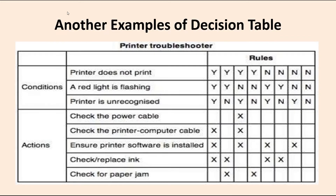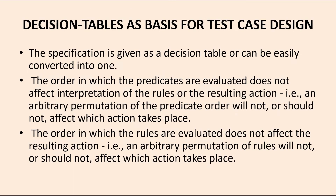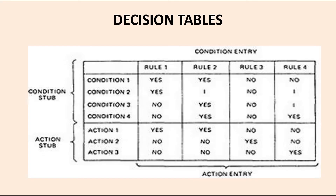Whenever you meet these conditions, you have to check the corresponding actions such as checking the power cable, the printer-computer cable, whether the software is correctly installed, replacing the ink, and whether any paper is jammed. For each condition, some rules are met and some are not. The actions are matched with the rules — checking the power cable meets one set of rules, checking the printer-computer cable meets another, and so on. This forms the complete printer troubleshooter rule set.